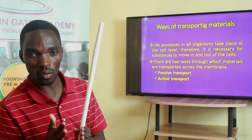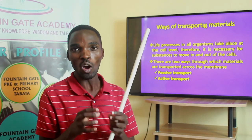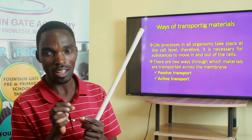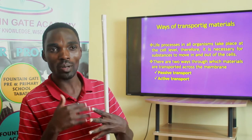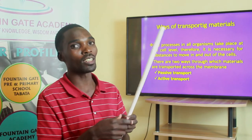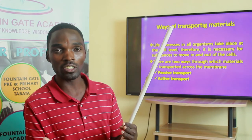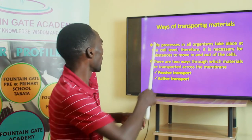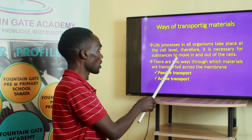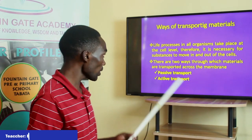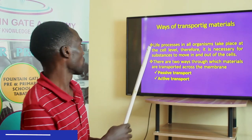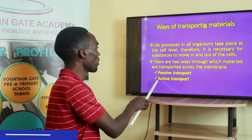Now we are going to deal with the ways of transporting materials. We have to remember that life processes are supposed to take place within the cell. Therefore, when we talk about transport of material within the living organism, we mean the movement of material in and out of the cell to accomplish life processes, whether nutrition, respiration, or other processes. There are two ways through which materials are transported across the membrane: passive transport and active transport.